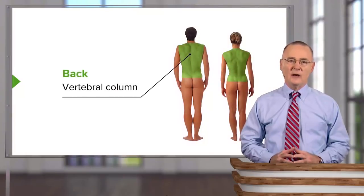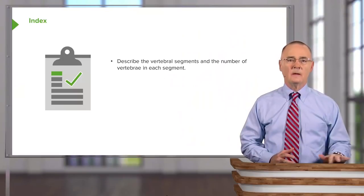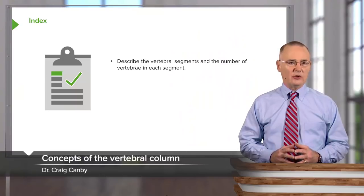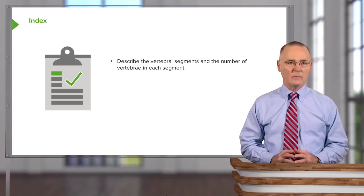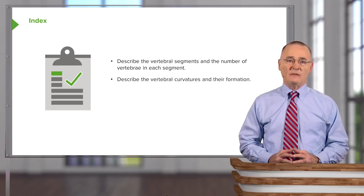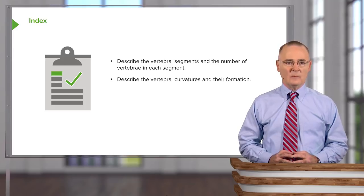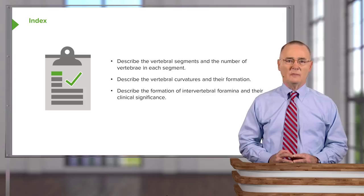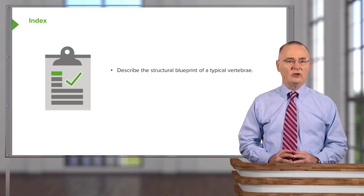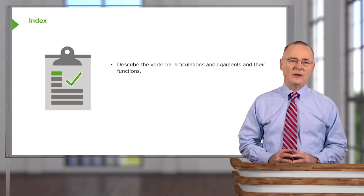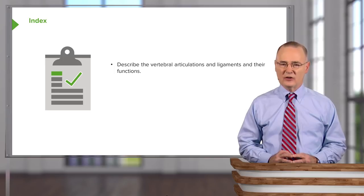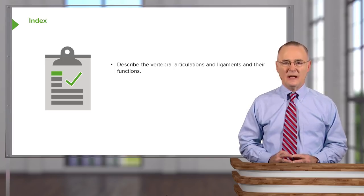Welcome to this lecture on the vertebral column. At the conclusion of this lecture, you as a learner should be able to describe the vertebral segments and the number of vertebrae in each segment, describe the vertebral curvatures and their formation, describe the formation of intervertebral foramina and their clinical significance, describe the structural blueprint of a typical vertebra, and compare and contrast the structural features of vertebral segments.